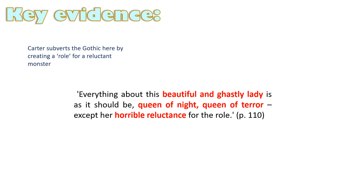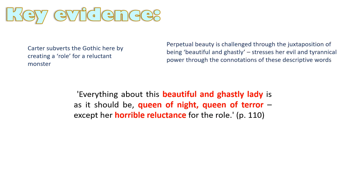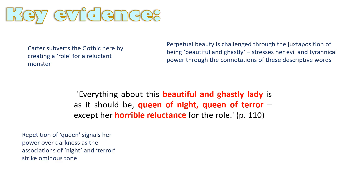It stresses her evil and her tyrannical power, and the connotations of both 'beautiful' and 'ghastly' fit wonderfully in this idea that she masks her vampire self in the veneer of purity, walking around in a wedding dress. The repetition of 'queen' signals her power over darkness. Those associations of night and terror that she's queen of strike an ominous tone, as does the acknowledgement that both are dark forces. Then we're given a clear description of how she fits the mould of an archetypal vampire — she's driven by her desires, but not reconciled by them.